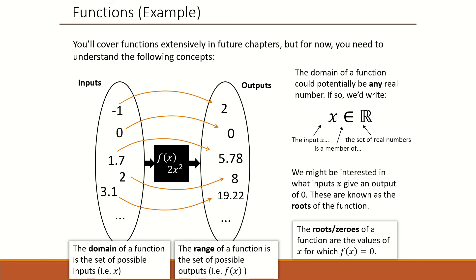For a question, we might be interested in what inputs x gives an output of 0. These are known as the roots of a function, i.e. where it crosses the x-intercept. We would have to calculate for the values of x in which f equals to 0.